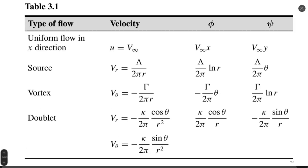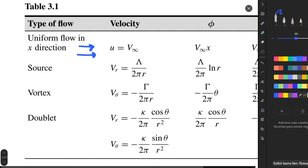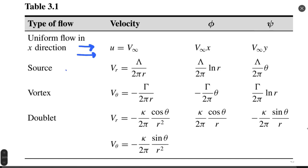Hello everyone. Today we continue to talk about flow types. Last time we discussed four different elementary flows which satisfy Laplace's equation: uniform flow where flow is directed horizontally, source flow going from one point to all directions uniformly, sink flow in the opposite direction, vortex flow where flow is rotating with known velocity components, and doublet flow which is a combination of source and sink flow.